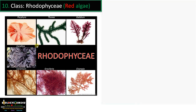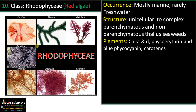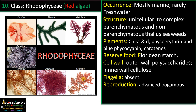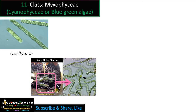Class 10 is Rhodophyceae, the red algae. They are mostly marine and rarely freshwater, ranging from unicellular to complex parenchymatous structures. Pigments include chlorophyll A and D, phycoerythrin (gives red color), phycocyanin, and carotenes. Reserve food is floridian starch, a special type of starch unique to this group. Cell wall has an outer polysaccharide layer and inner cellulose layer. Flagella are absent. Reproduction is advanced oogamous — they are considered the most advanced group of algae. Examples include Polysiphonia, Porphyra, Ceramium, and Gracilaria, which is a source of agar-agar widely used in media preparation, plant tissue culture, and bacteriology.